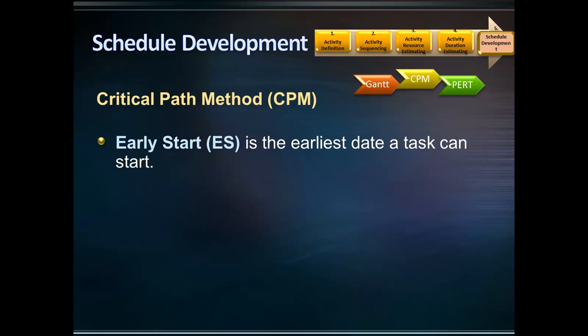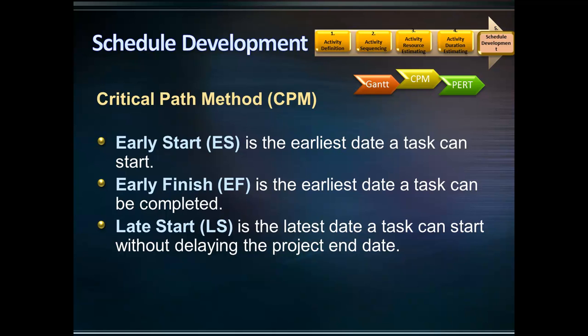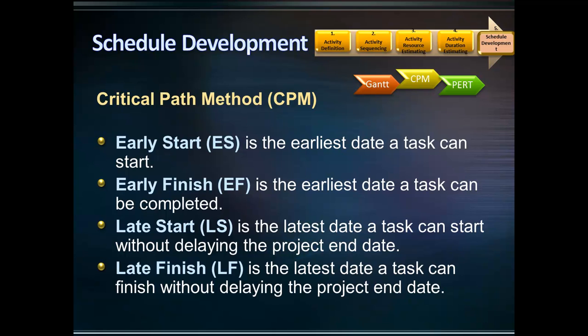Early start, ES, is the earliest date a task can start. Early finish, EF, is the earliest date a task can be completed. Late start, LS, is the latest date a task can start without delaying the project end date. Late finish, LF, is the latest date a task can finish without delaying the project end date.